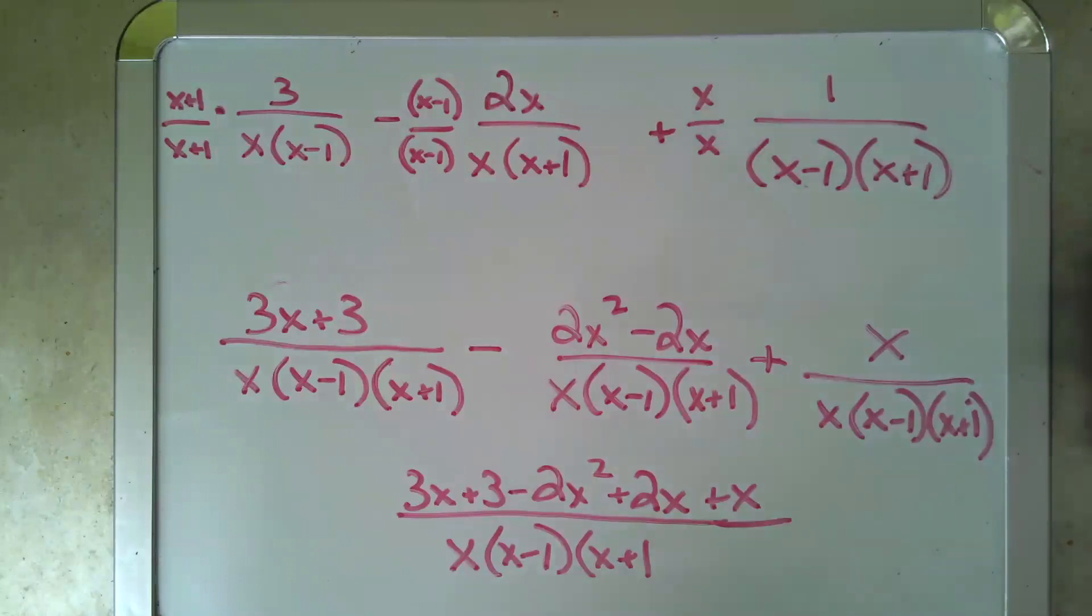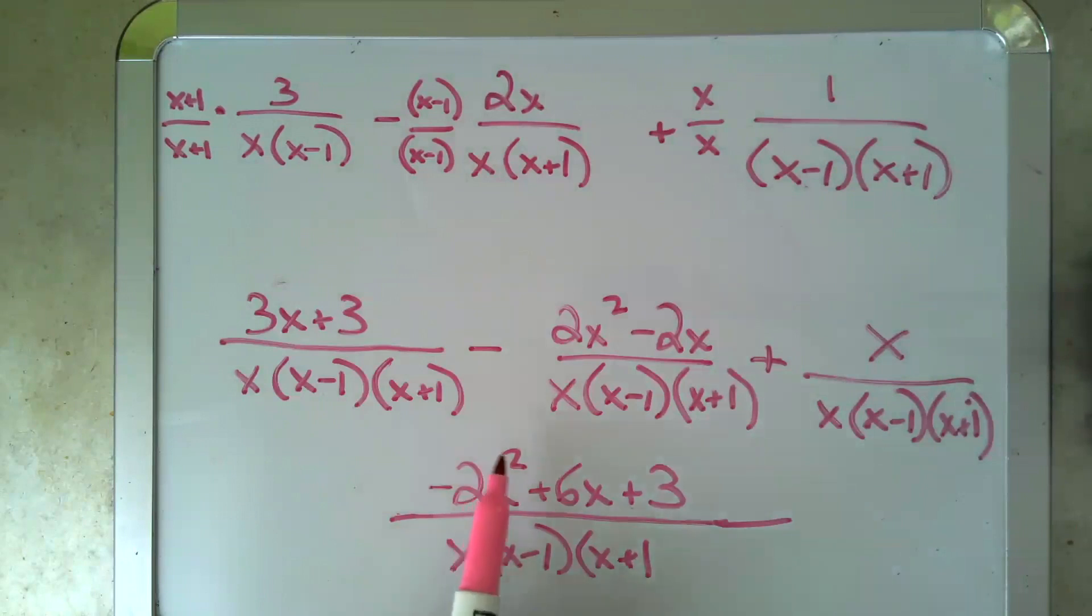Last step is I'm going to combine like terms. So I have a 3x plus an x, that'll be 4x plus another 2x, 6x. And then I have no other number term and I have no other squared term. And I'll maybe reorder these: minus 2x squared plus 6x plus 3.